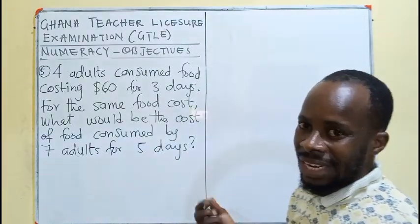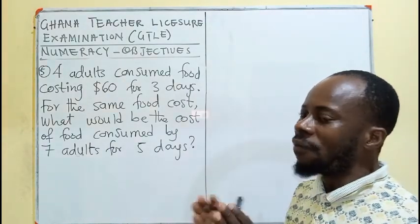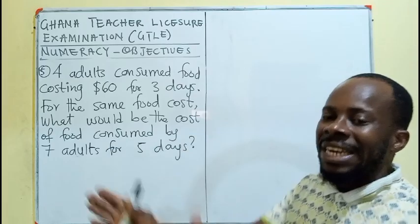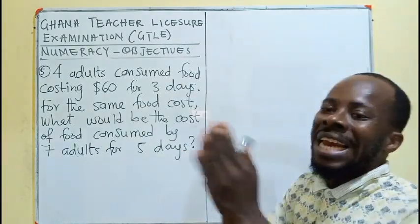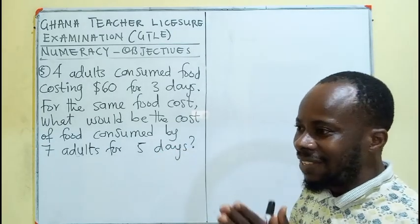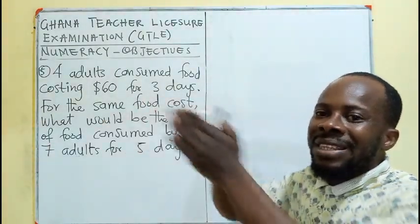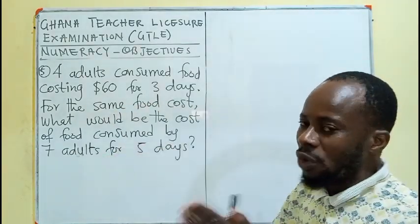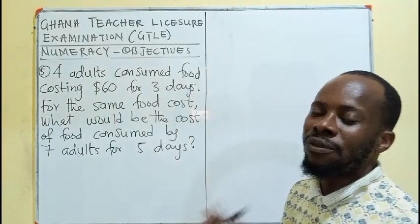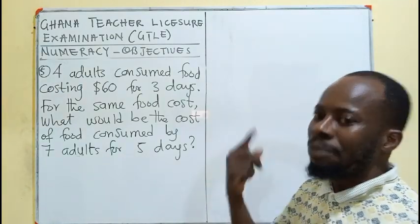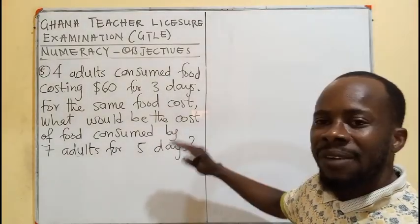We cannot just use simple ratio and proportion because there are three quantities. There are 4 adults eating for 3 days. So let's find the food cost in a day. If we know the cost of food for 1 day per person, we can find the cost for 7 people in 5 days.